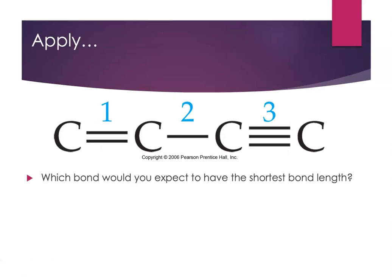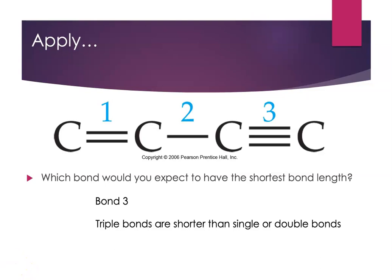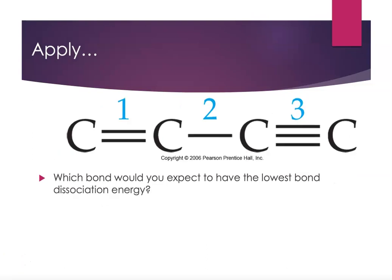Let's wrap up with a couple of practice problems. Which bond would you expect to have the shortest bond length — bond 1, bond 2, or bond 3? We want the shortest bond length, and atoms sharing more pairs of electrons with a higher bond order will have shorter bonds. We would expect bond 3, the triple bond, to have the shortest bond length. Bond 2 would be the longest bond.